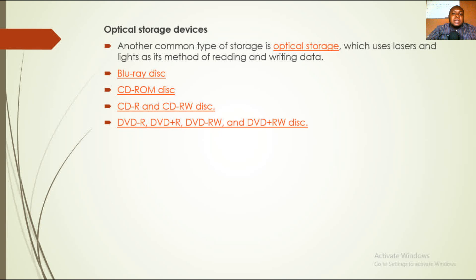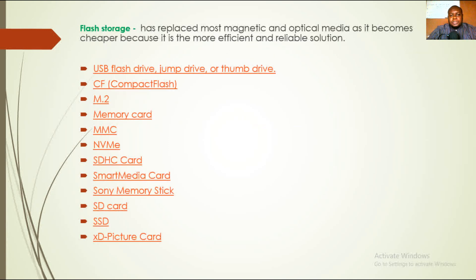Optical storage devices make use of light as a method of reading, writing, and processing data. Examples include the Blu-ray disk, CD-ROM disk, CD-R, and CD-Writable disk. We also have the DVD-Writable, DVD-Writable Plus, and DVD-Writable disk.